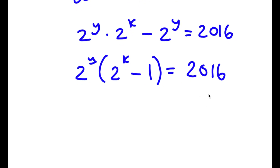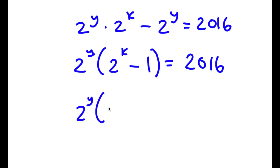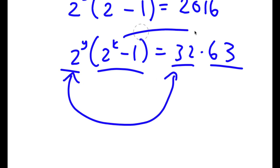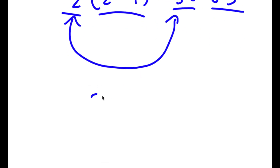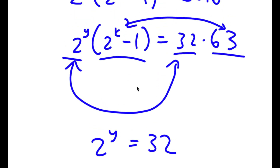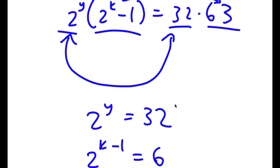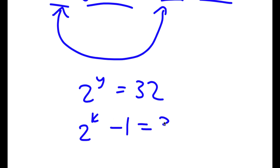I can rewrite 2016 as 32 times 63. Notice that 32 is even and 63 is odd. On the left side, 2 to the power of y is even, and 2 to the power of k minus 1 is odd — since 2 to any power is even, and even minus 1 is odd. So these factors match: 2 to the power of y equals 32, and 2 to the power of k minus 1 equals 63.